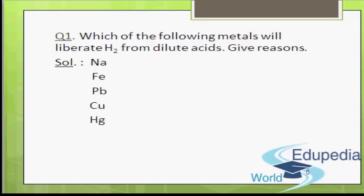We will start with question number 1. Question number 1 says: which of the following metals will liberate hydrogen from dilute acids, and give reasons? The metals are sodium, iron, lead, copper, and mercury. We have to identify which metal will liberate hydrogen from dilute acids.